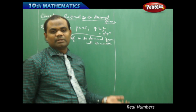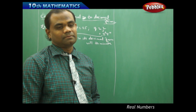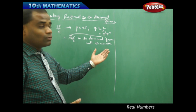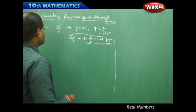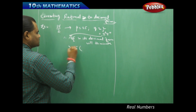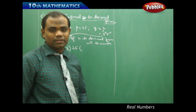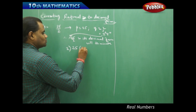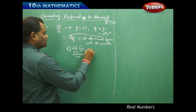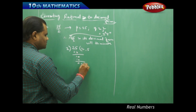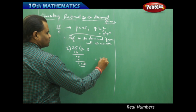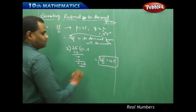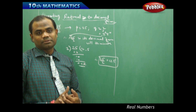It is not a repeating decimal but it will terminate. Let's see what value it terminates to. Using the division process to find 25 over 2: 2 into 25 gives 12 remainder 1, bring down 0, 2 into 10 gives 5 remainder 0. Therefore 25 over 2 equals 12.5.